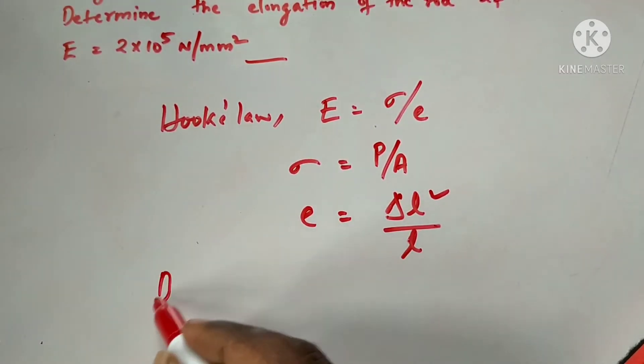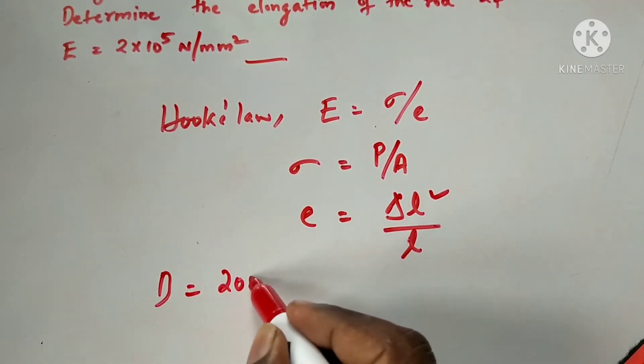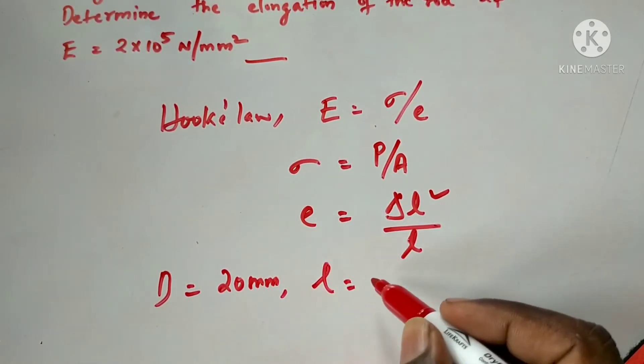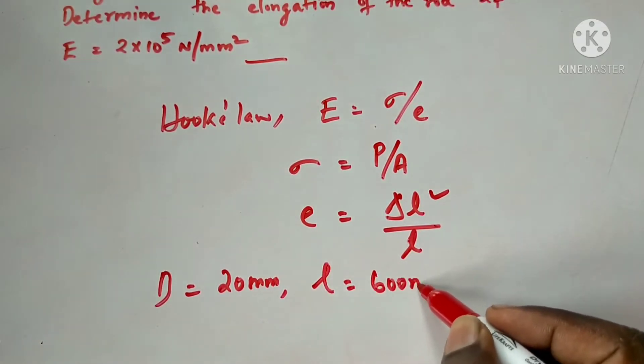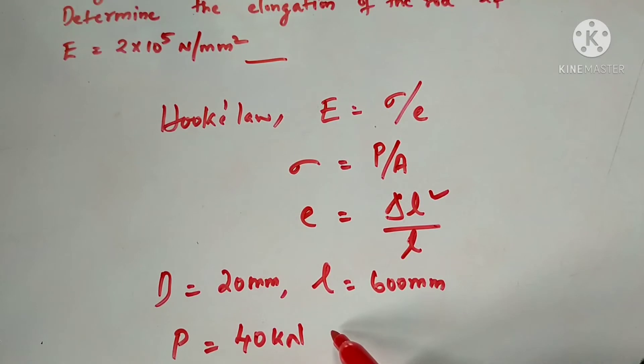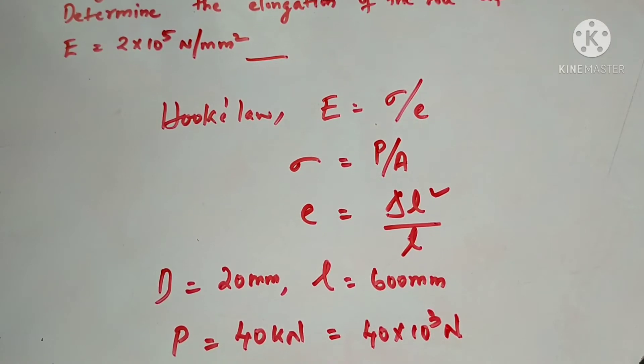The diameter is 20 mm. Length is 600 mm. P value is 40 kN. If we convert to Newtons, that's 40 × 10³ N. Now we have all the values.